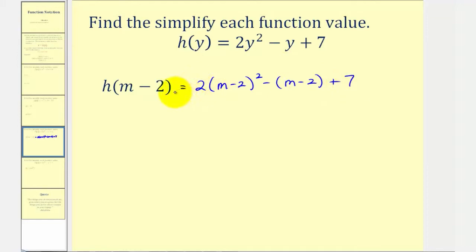First, we need to simplify the exponents. So we have to multiply m minus 2 by itself. That would give us 2 times m minus 2 times m minus 2. Let's go ahead and multiply this out first. We'll have four products: 1, 2, 3, and 4.